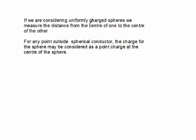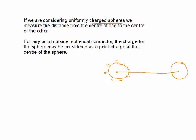As a comment, we are considering a uniformly charged sphere. For a charged conducting sphere, the charge distributes itself on the surface. The distance R would be measured from the center of one sphere to the center of the other. So for any point outside the spherical conductor, the charge of the sphere may be considered concentrated at its center.